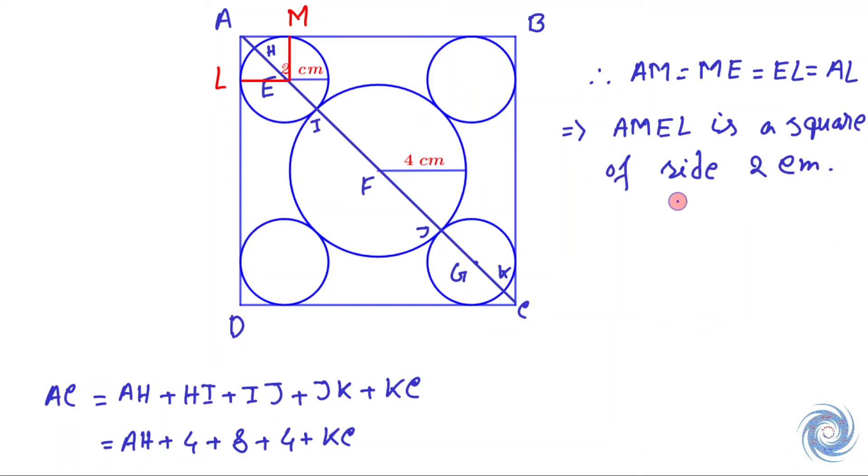AMEL is a square of side 2 cm. Therefore, we can get the length of AE. AE equals 2√2.